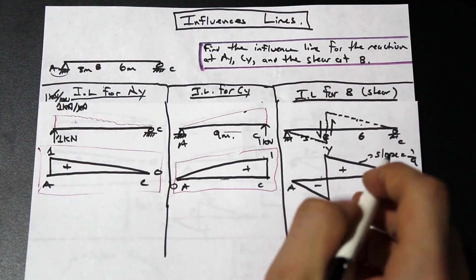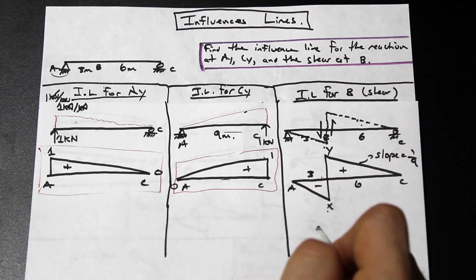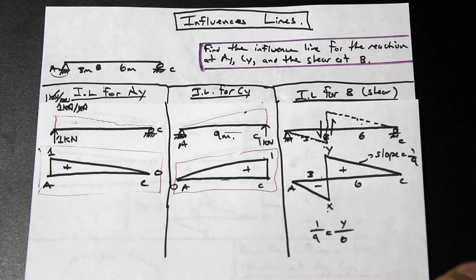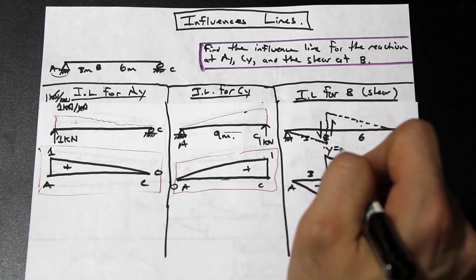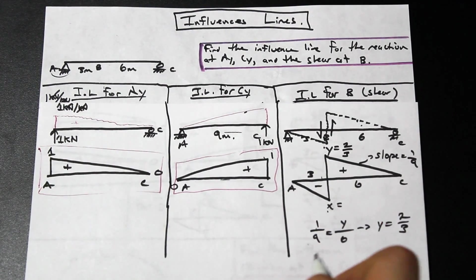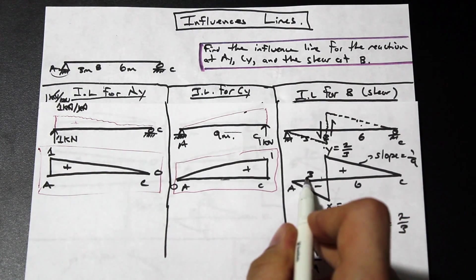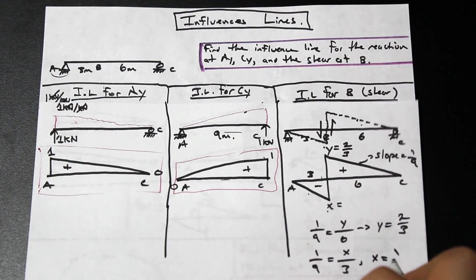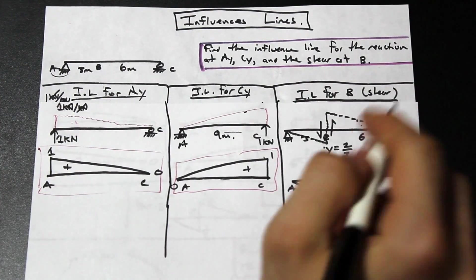With the run of six meters on the left side, we solve for Y: slope one over nine equals Y over six, so Y equals six times one over nine, which is two-thirds. For X on the right with a run of three meters: one over nine equals X over three, so X equals one-third. Since it's downward, it's negative one-third. That's the influence line for shear at B.